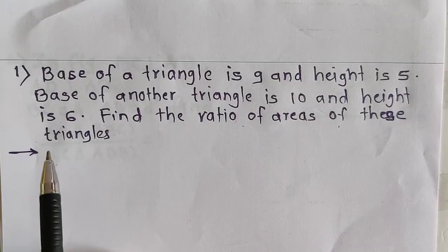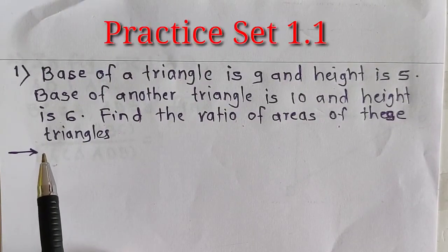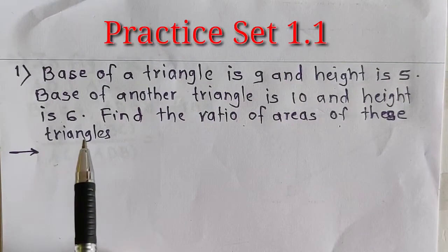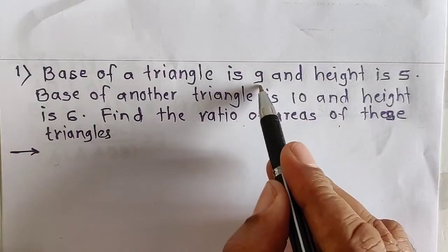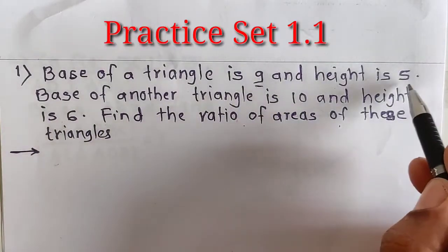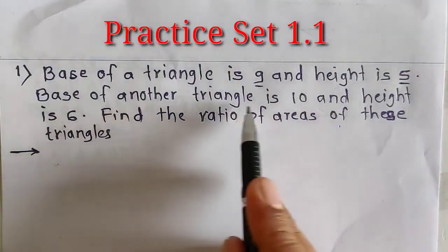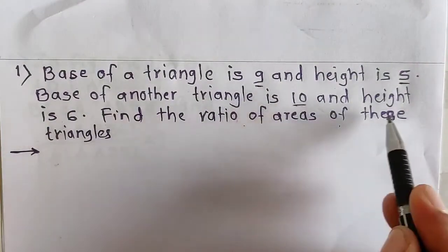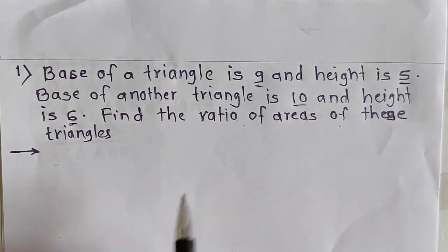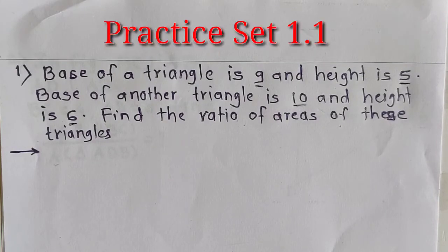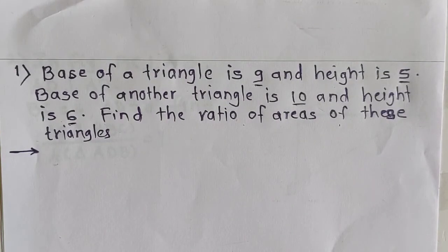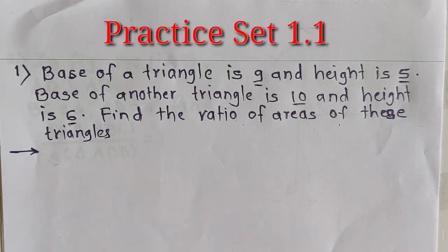In this first sum, what is given? Base of one triangle is 9 and height is 5, and base of another triangle is 10 and the height is 6. Find the ratio of areas of those triangles. While finding the ratio, the names of the triangles are not given, so let the triangles be triangle 1 and triangle 2.